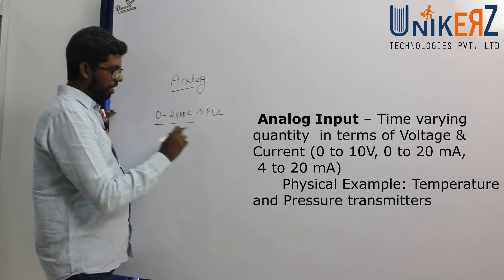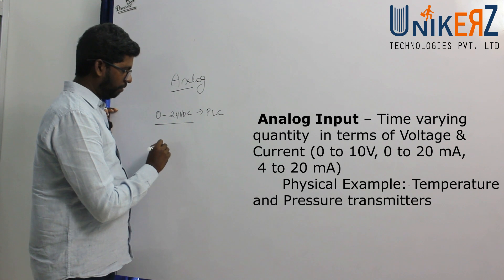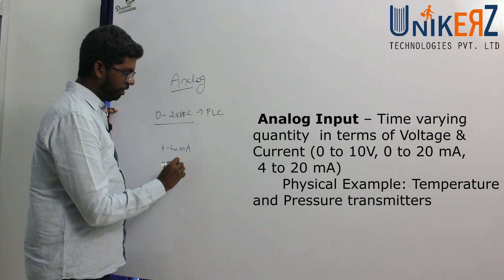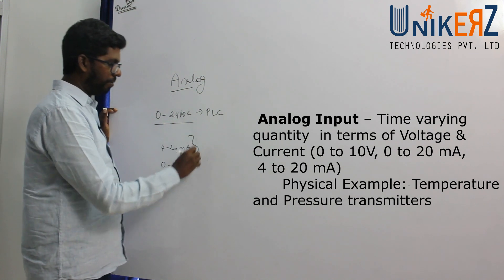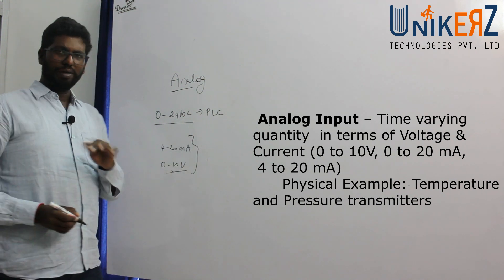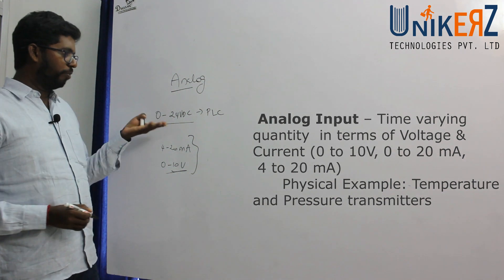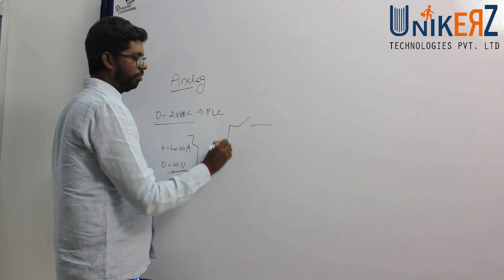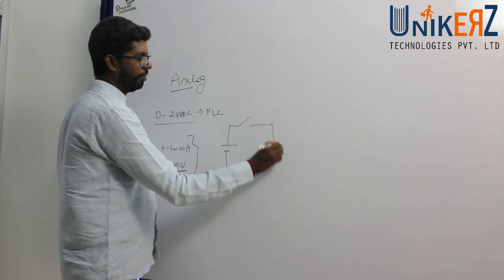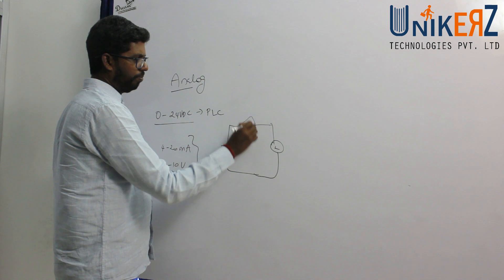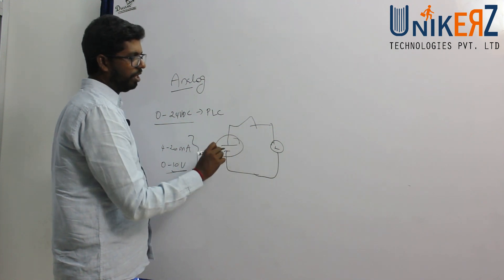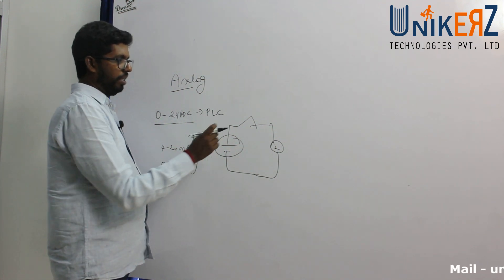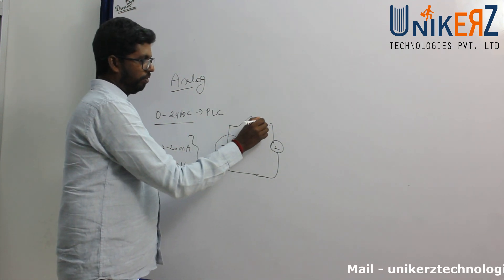For analog signals, the equivalent ranges are 4 to 20 milliamps or 0 to 10 volts. If there is a switch and a lamp, when I switch it on I will see the full voltage in that circuit. That is why a regulator is used.